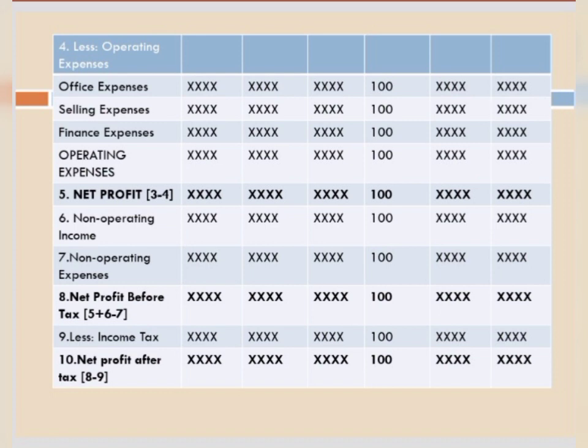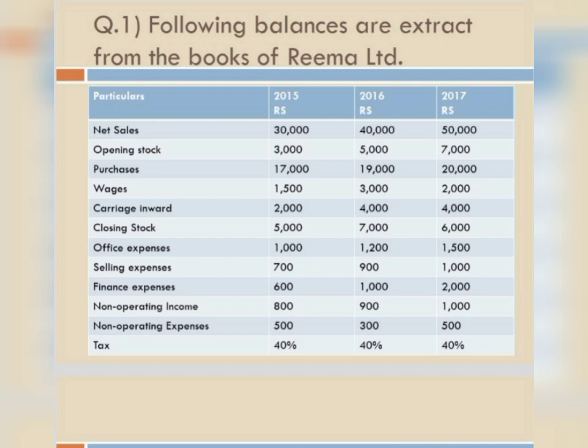This is the trend income statement analysis format. On this basis, I have taken a question — an example — so that you will understand easily. Without solving an example, you will not understand, so let's quickly start the question. Now, let's look at Question 1: Following balances have been extracted from the books of Freemal Limited.